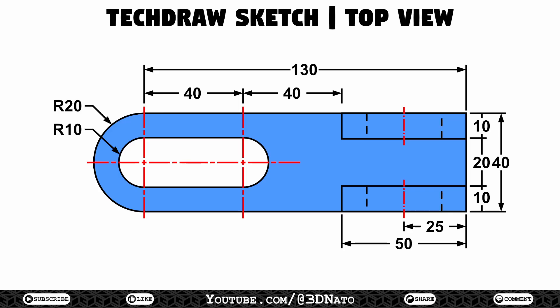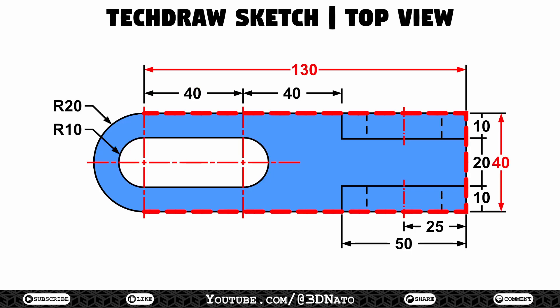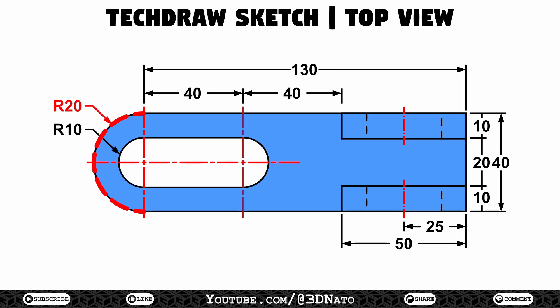The next thing I like to do is to break the object into basic shapes. Here I can see that we have three basic shapes. The first one is this 20mm radius semicircle. The second one are these two 10mm radius semicircles that are 40mm apart. And the third one is this 130x40mm rectangle. These two smaller 50x10mm rectangles I'll leave for the front view sketch. I'm going to start my sketch with this 20mm radius semicircle.